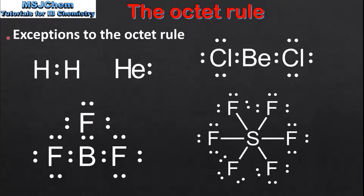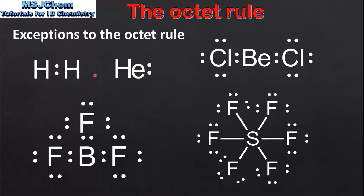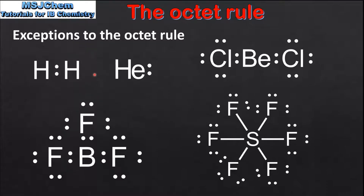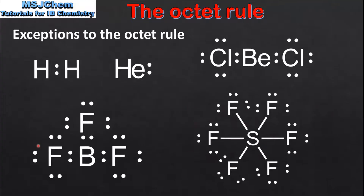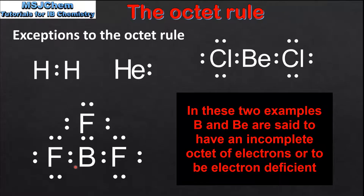Next we'll look at the exceptions to the octet rule. The first two are hydrogen and helium. Both atoms are in period 1 of the periodic table, therefore they can only hold 2 electrons in their valence shells. So when hydrogen forms a bond with another atom it can only hold 2 electrons in its valence shell. Helium, being a noble gas, does not form compounds. It exists as a monoatomic element with 2 electrons in its valence shell. Next we have BF3, which is boron trifluoride. If we look at the Lewis structure we can see that the boron atom only has 6 electrons in its valence shell. Boron is an exception to the octet rule in that it is stable with less than 8 electrons in its valence shell.